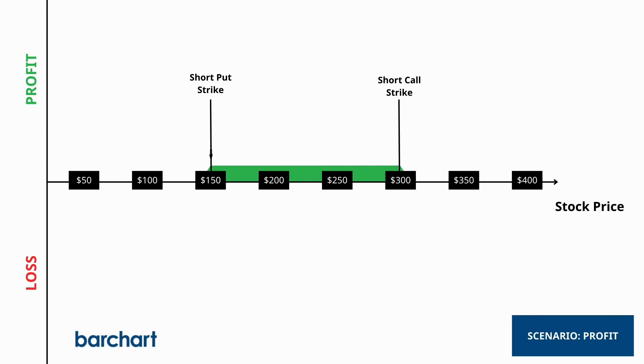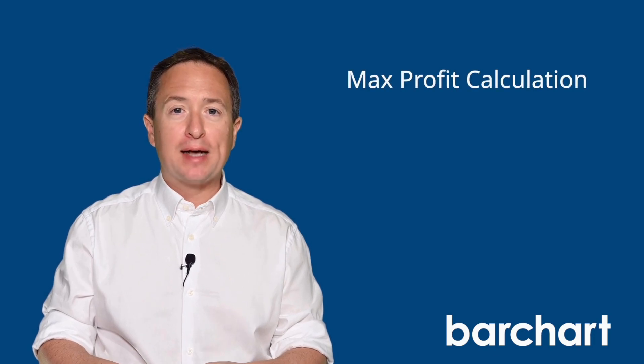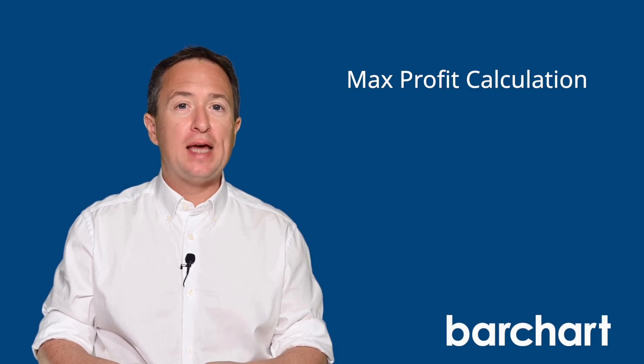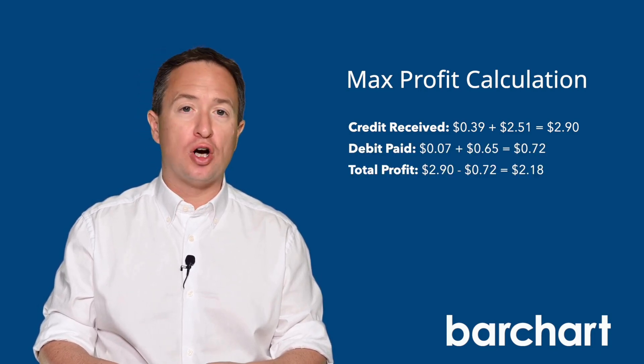Let's go ahead and break down the trade. With this short iron condor, you want Tesla stock to trade between $150 and $300 — those are your short strikes — at expiration. So let's say Tesla's stock price trades at $240 by expiration. If that's the case, all four options expire out of the money, and you get to keep the full premium credit for the trade, which is $2.18 a share, or $218 per contract. To calculate the maximum profit on a short iron condor, simply add the premium received from the short options and then subtract the premiums paid for the long options.